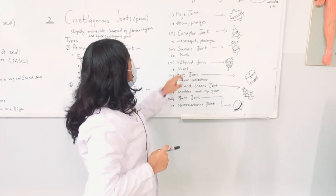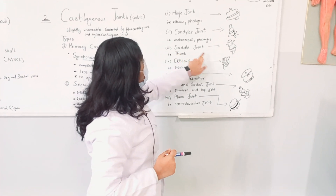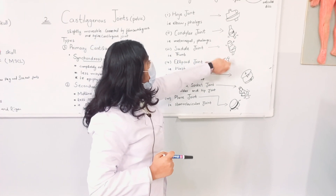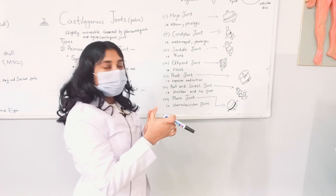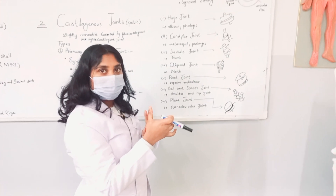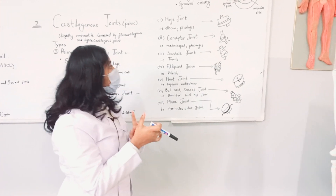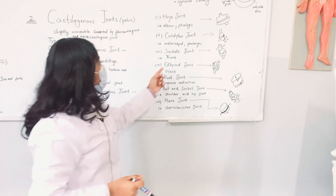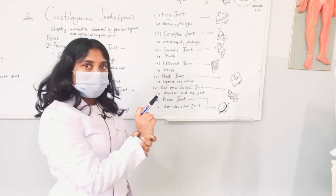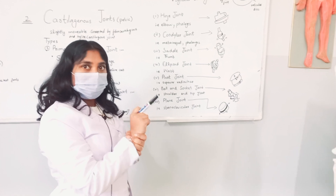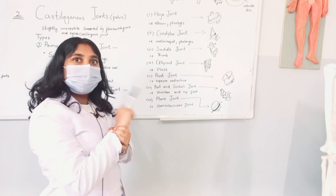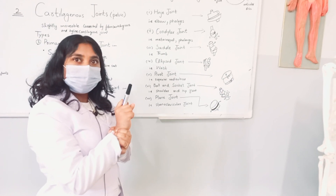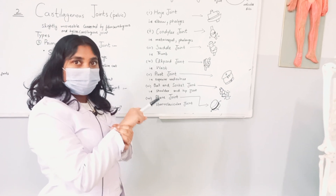The saddle joint — this is its diagram — is like the thumb joint. An example involving the ellipse is the wrist, which moves frontward and backward and is called the wrist joint.